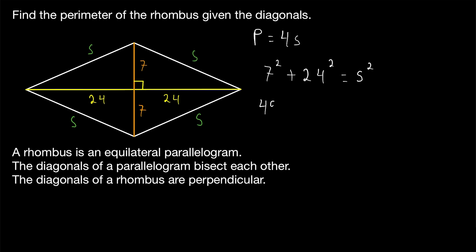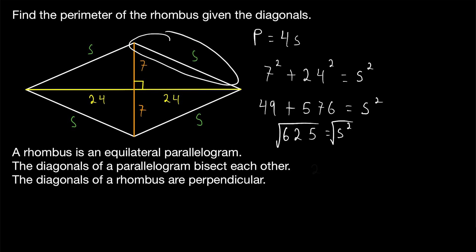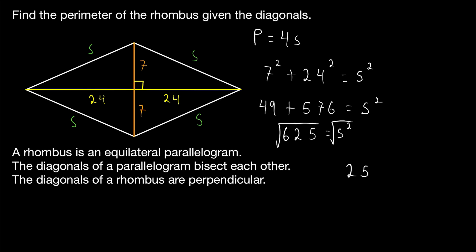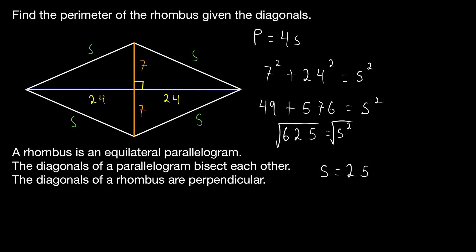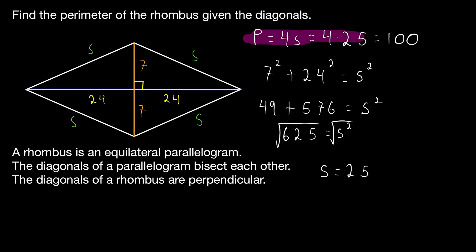So, 7 squared plus 24 squared equals S squared. 7 squared is 49, 24 squared is 576, and 49 plus 576 is 625. So S squared equals 625. Taking the square root of both sides, the square root of 625 is 25, so the side length of our rhombus is 25. Since all four sides are congruent, the perimeter is 4 times the side length — 4 times 25 — which is 100. The perimeter of our rhombus is 100.